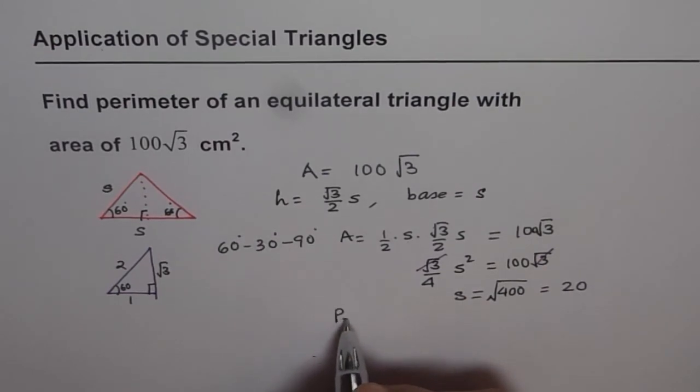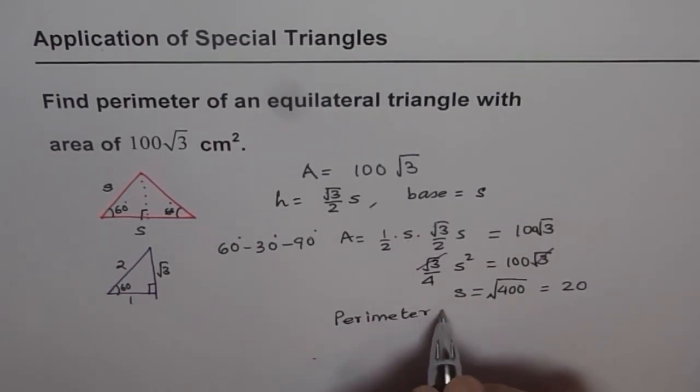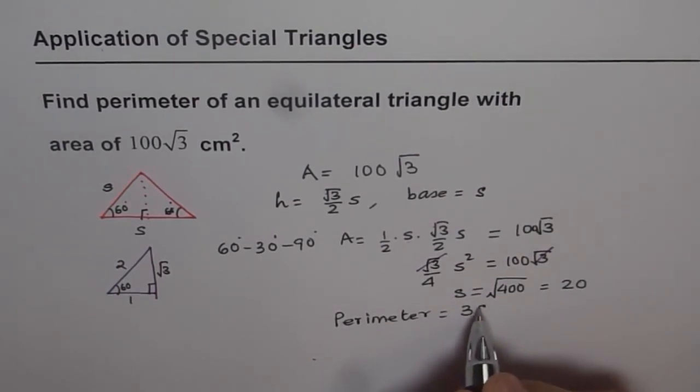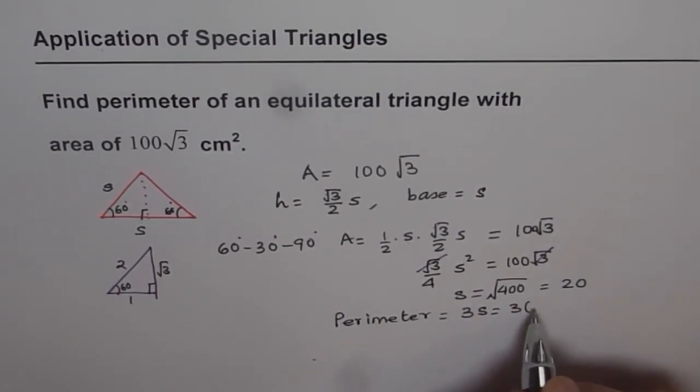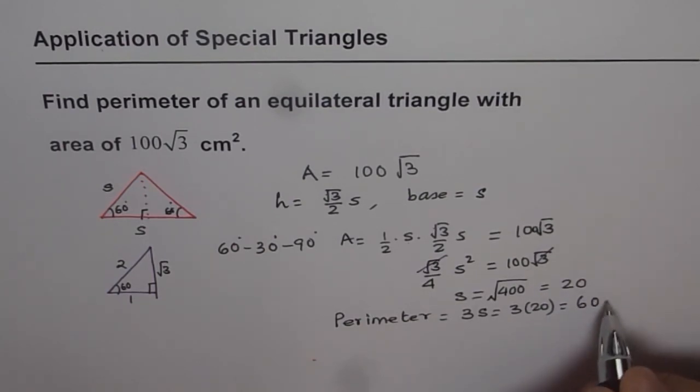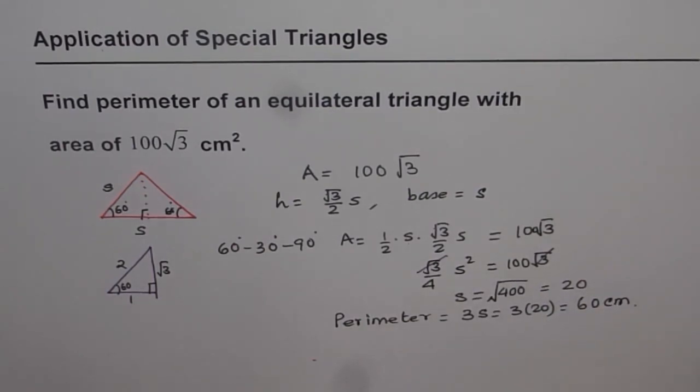And therefore, perimeter, which is 3 times s, should be equal to 3 times 20 and is equal to 60 centimeters. So that is how we can solve this question. I hope that is absolutely clear. Thank you.